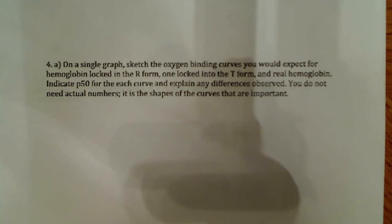This first problem here says, on a single graph, sketch the oxygen binding curves you would expect for hemoglobin locked in the R form, one locked in the T form, and real hemoglobin. Indicate P50 for each curve and explain any difference observed. You do not need actual numbers. It is the shape of the curves that are important. So, the shape of the curves are important.